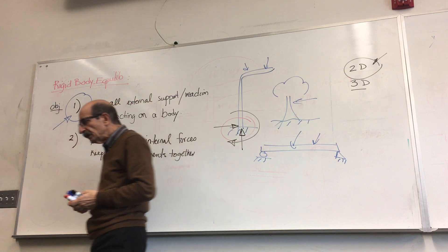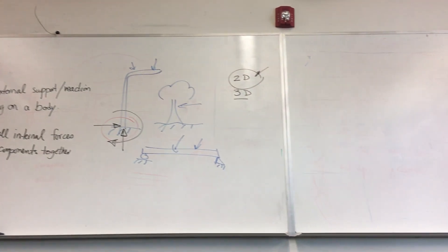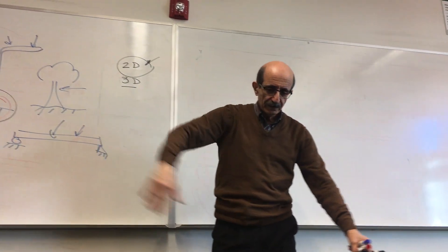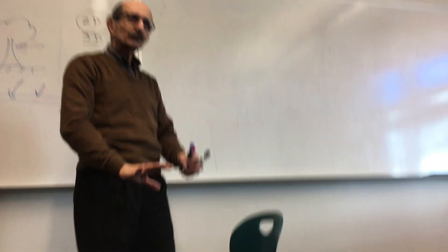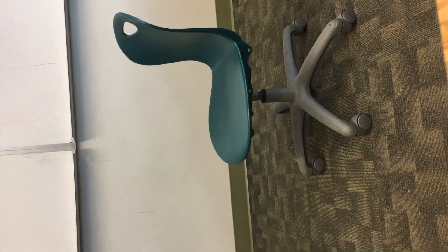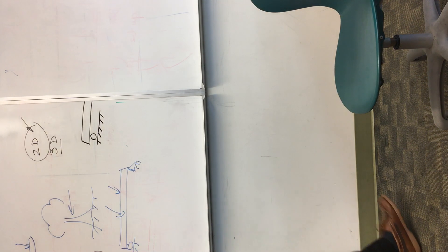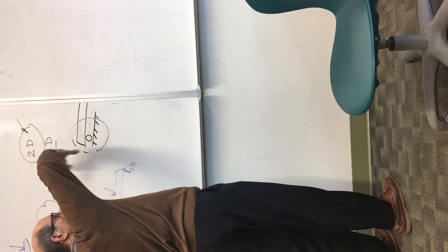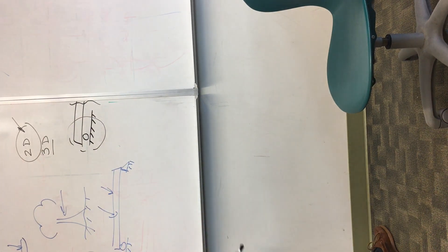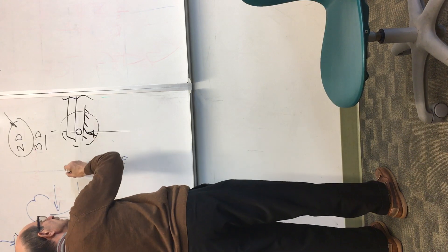In 2D structures, the types of motions that are prevented are very limited. If you have a 2D structure, there are only three possibilities for a connection. A support may hold the structure such that rotation at the point of support is allowed, and motion in one direction is allowed — only motion perpendicular to that allowed direction is prevented. We call this a roller.